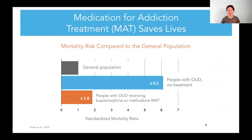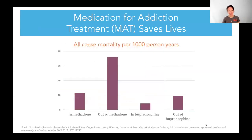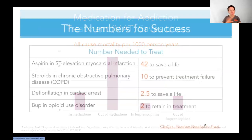Why do we really care about getting patients onto buprenorphine or methadone? Because it has an insane mortality benefit. People who are using opioids have a six times risk of death compared to the general population. But if you can get that person onto medications for addiction treatment — specifically methadone or buprenorphine — you're decreasing their mortality risk back down to close to that of the general population. There are very few medicines that give us this intense decrease in mortality.